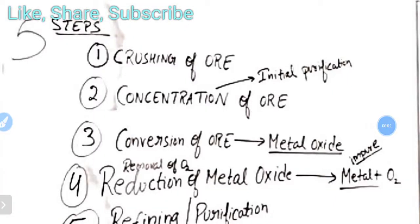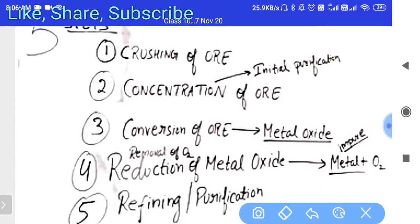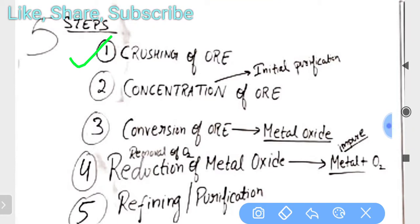In the chapter on extraction of metals, or metallurgy, we have to extract metal from ore. There are five step processes whenever we want any metal from its ore. The first method is crushing of ore — just break the ore down into its small particles. This is the first step if you want to obtain metal from any of its ore.